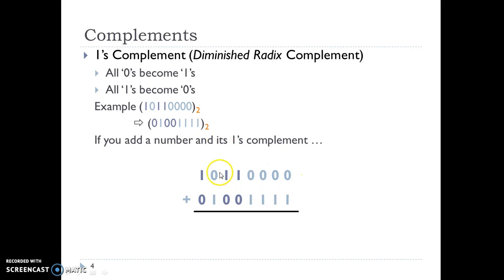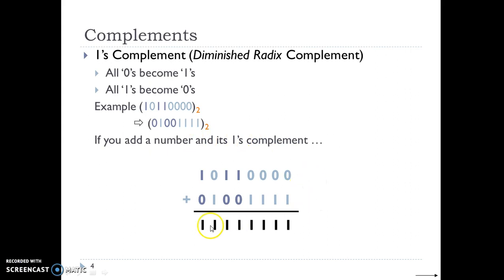And if we add a number with its 1's complement, we will get all 1's, which is very obvious because adding a number with its inverted form always gives 1 in every bit position.